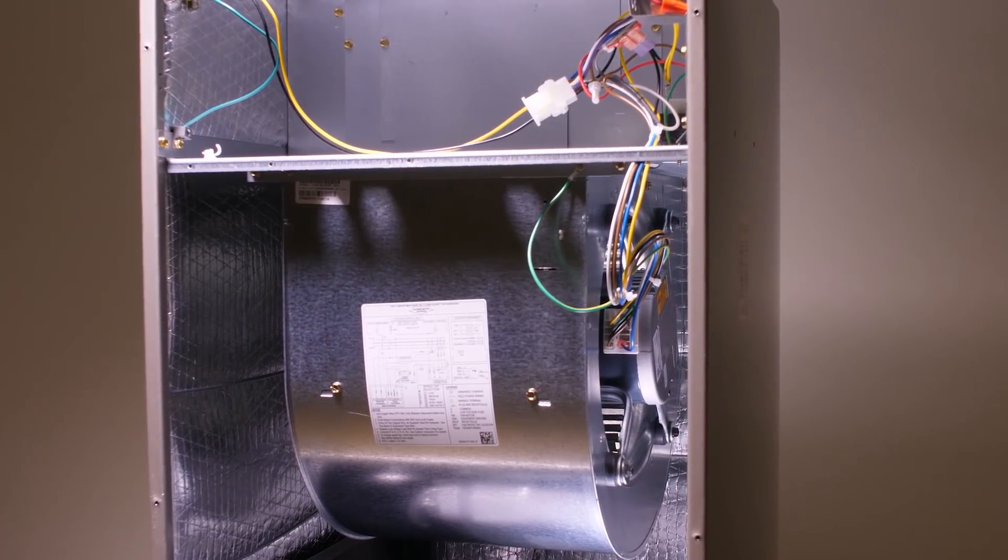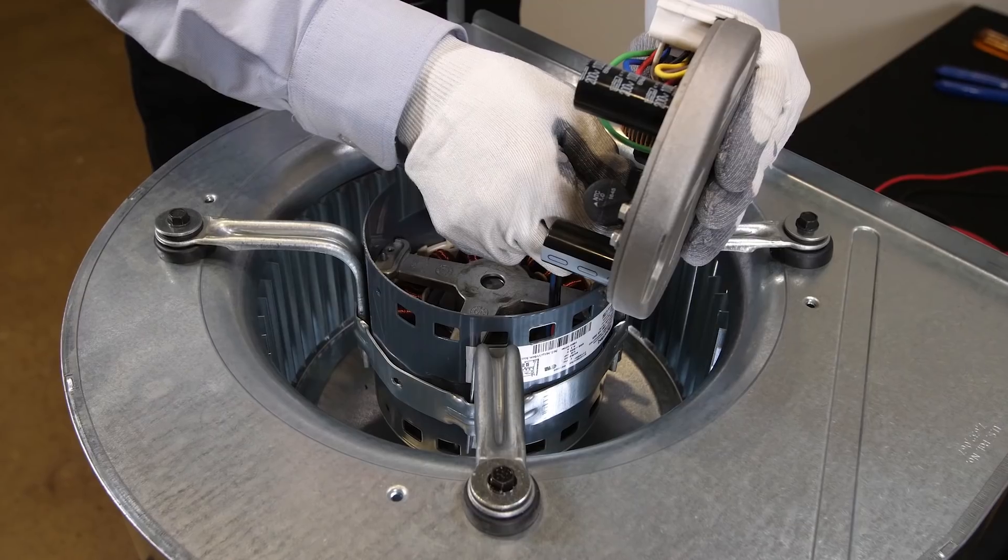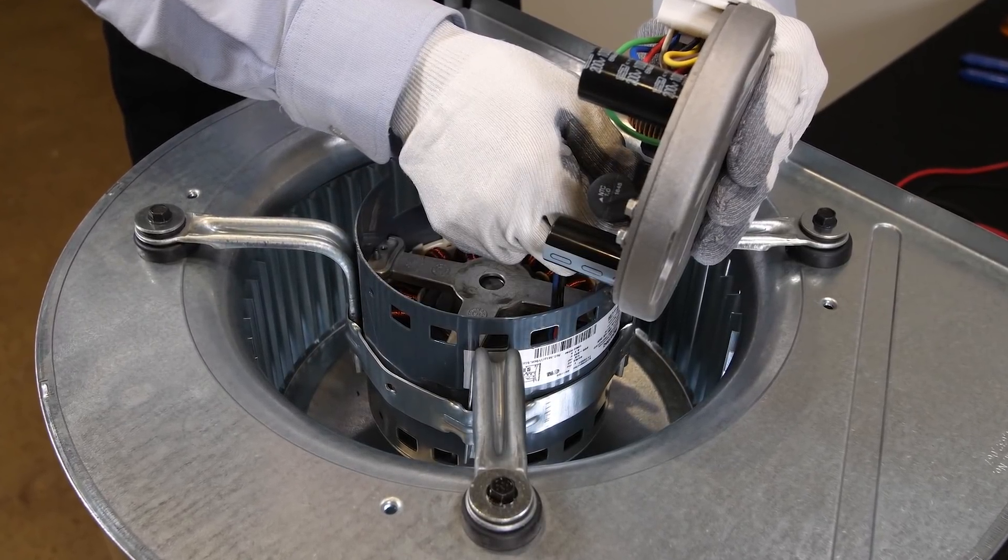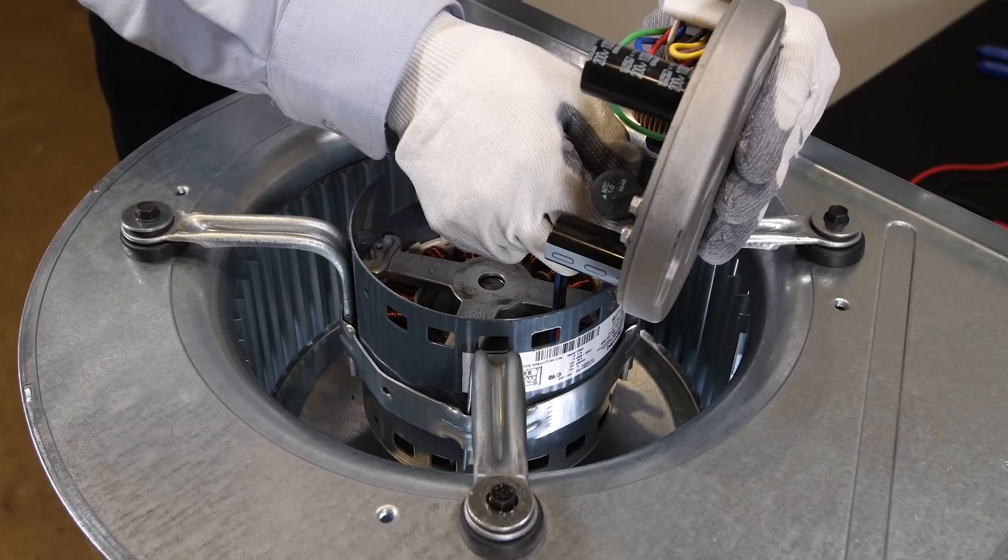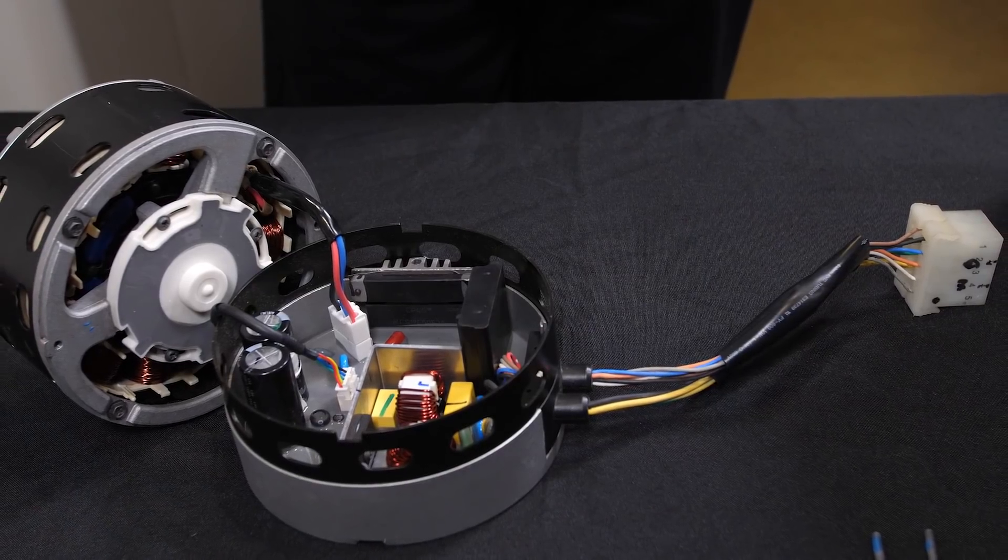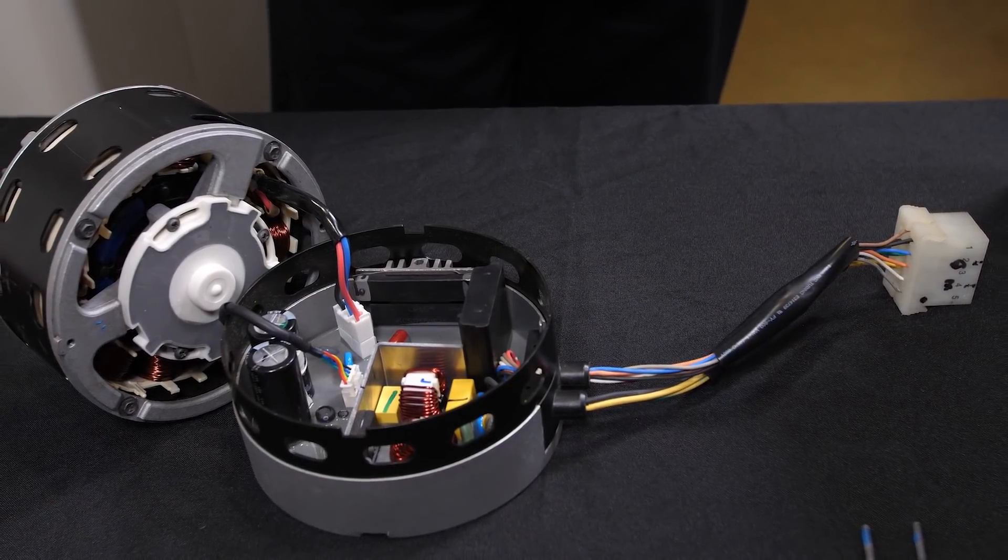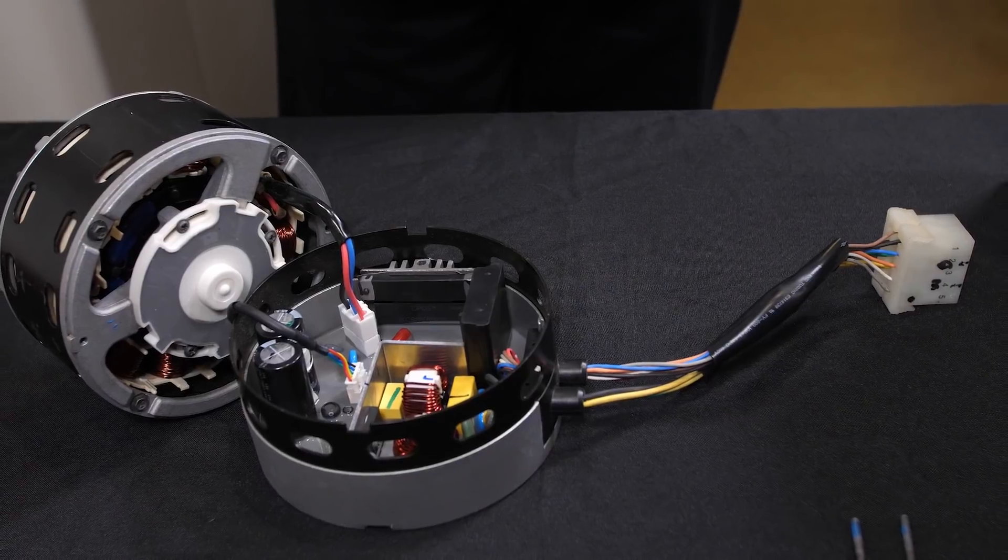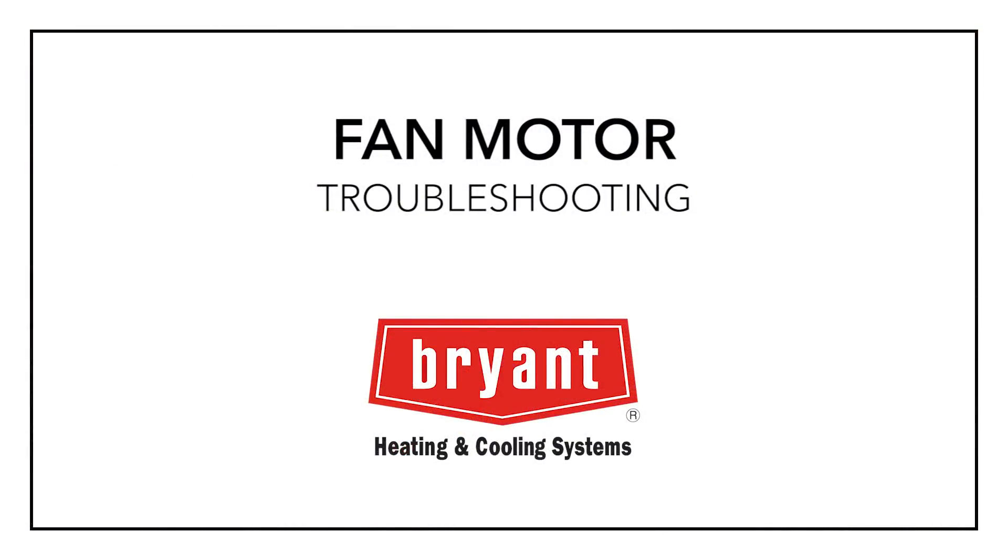This video will walk you through ways to troubleshoot the motor and modules separately so you can accurately identify the real problem. You may need to replace only the module, which involves only two bolts, making it a faster and easier part change than changing the entire motor. It just makes sense to replace only what needs replacing.